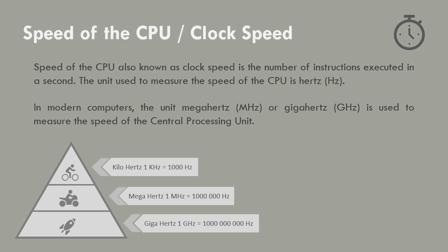Speed of the Central Processing Unit, also known as clock speed, is the number of instructions executed in a second. The unit used to measure the speed of the Central Processing Unit in modern computers is megahertz (MHz) or gigahertz (GHz).